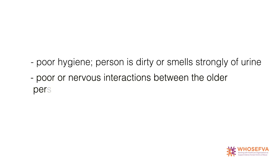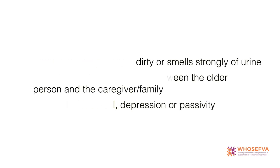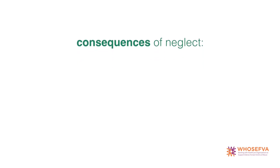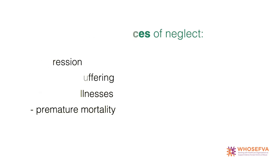Poor or nervous interactions between the older person and the caregiver or family, signs of withdrawal, depression, or passivity. Possible consequences of neglect include depression, emotional suffering, infectious illness, and/or premature mortality.